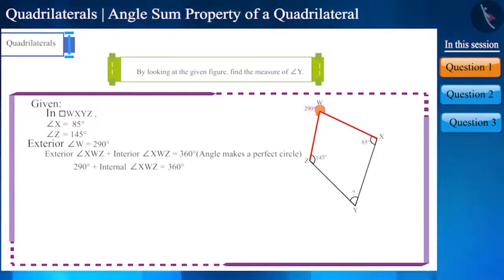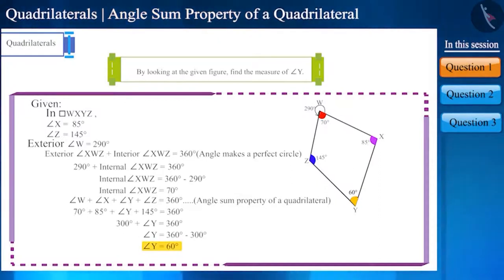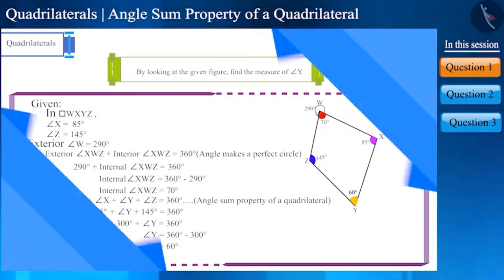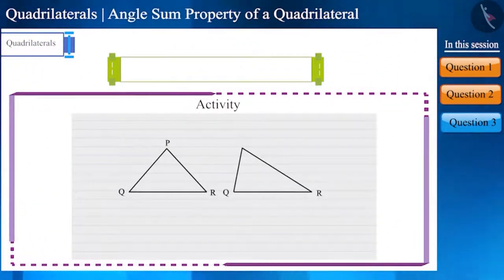Using this, we can find the measure of the interior angle XWZ. We got the measure of the interior angle XWZ as 70 degrees. Now we have the measurement of the three interior angles of the quadrilateral. We can easily find the measurement of the fourth angle. We got the measurement of angle y as 60 degrees.